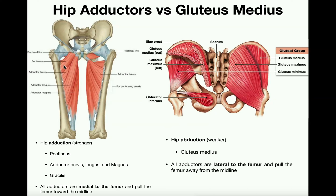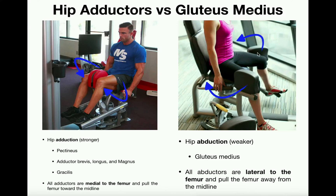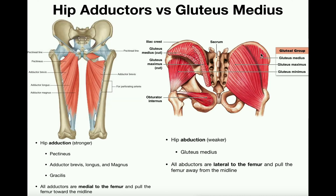Now we look at the hip abductor: the gluteus medius. The gluteus medius is the major hip abductor. If adduction is moving the thighs close to one another, then abduction is spreading the legs farther apart. Looking at the abductor machine, just like shoulder abduction moves the humerus away from the midline, hip abduction moves the thighs away from the midline — outward and apart from one another. The major agonist of this movement is the gluteus medius, which attaches on the lateral side of the femur.